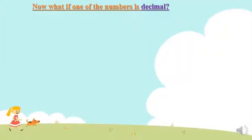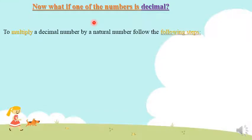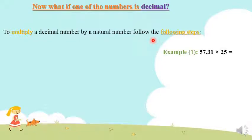Now, what if one of the numbers is decimal? What do you do when you want to multiply two numbers and one of them is a decimal number? To multiply a decimal number by a natural number, you have to follow these steps. Let's take an example and apply them. Example 1: multiply 57.31 times 25.